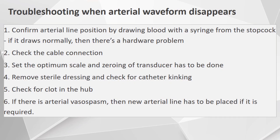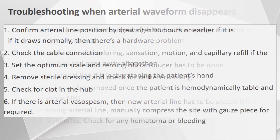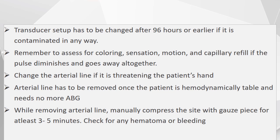Coming to troubleshooting when the arterial waveform disappears. First, confirm the arterial line position by drawing blood with a syringe from the stopcock. If blood draws normally, there is a hardware problem — check the cable connections, then set the optimum scale and perform zeroing of the transducer. Remove the sterile dressing and check for catheter kinking, and check for any clot in the hub of the catheter. If there is arterial vasospasm, a new arterial line needs to be placed if required. The transducer setup has to be changed after 96 hours or earlier if contaminated. Also assess for color, sensation, motion, and capillary refill if the pulse diminishes. Change the arterial line if it is threatening the patient's hand. The arterial line must be removed once the patient is hemodynamically stable and no longer requires it. While removing the arterial line, manually compress the site with gauze for at least 3–5 minutes and check for any hematoma or bleeding.